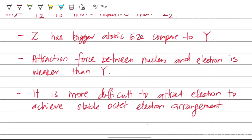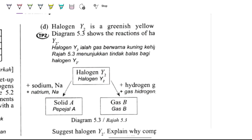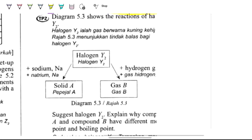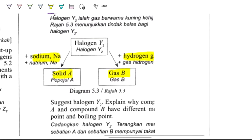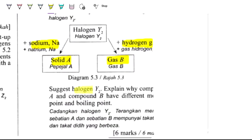Halogen Y2 is a greenish-yellow gas, meaning it is chlorine gas. When chlorine reacts with sodium, it produces a solid A. When it reacts with hydrogen gas, it forms a gas B. Explain why compounds A and B have different melting and boiling points. That is 6 marks.